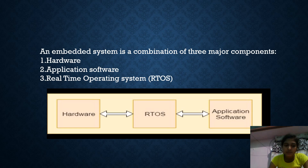Hardware refers to the physical elements of any computer or electronic system. It has four main categories: input devices, output devices, secondary storage devices, and internal components. It is also developed using electronic and other materials. When it is damaged, it can be replaced with a new component and also starts functioning once the software is loaded into the system.